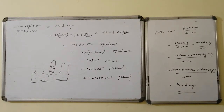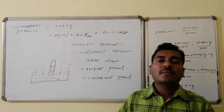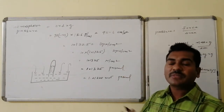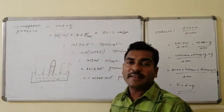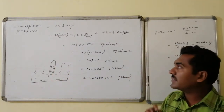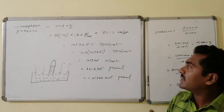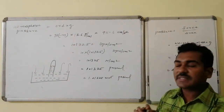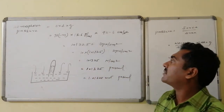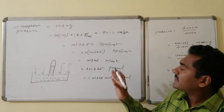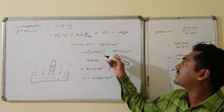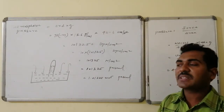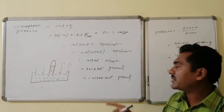From experimental data, atmospheric pressure is calculated as h × d × g. The height raised is 76 cm, density of mercury is 13.6 g/mL, and acceleration due to gravity in CGS is 980.6 cm/s². Their product equals 1,013,250 dynes per centimeter square. Dividing by 10 (since 10 dynes/cm² = 1 Pascal), it becomes 101,325 Pascals, or 1.01325 × 10⁵ Pascals.